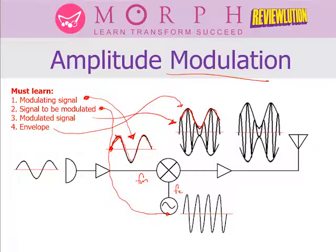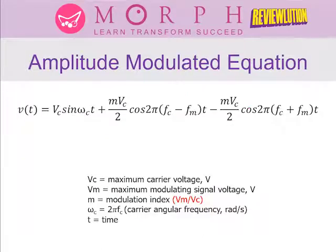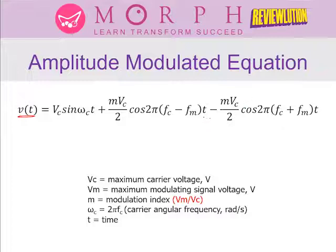To summarize: in amplitude modulation, when the amplitude of the modulating signal changes, the amplitude of the carrier also changes. If there is no change in the modulating signal, there is no change in the carrier amplitude. That is the basic concept of AM. Now let's move to the equation for amplitude modulation — the instantaneous voltage equation — which has three terms.